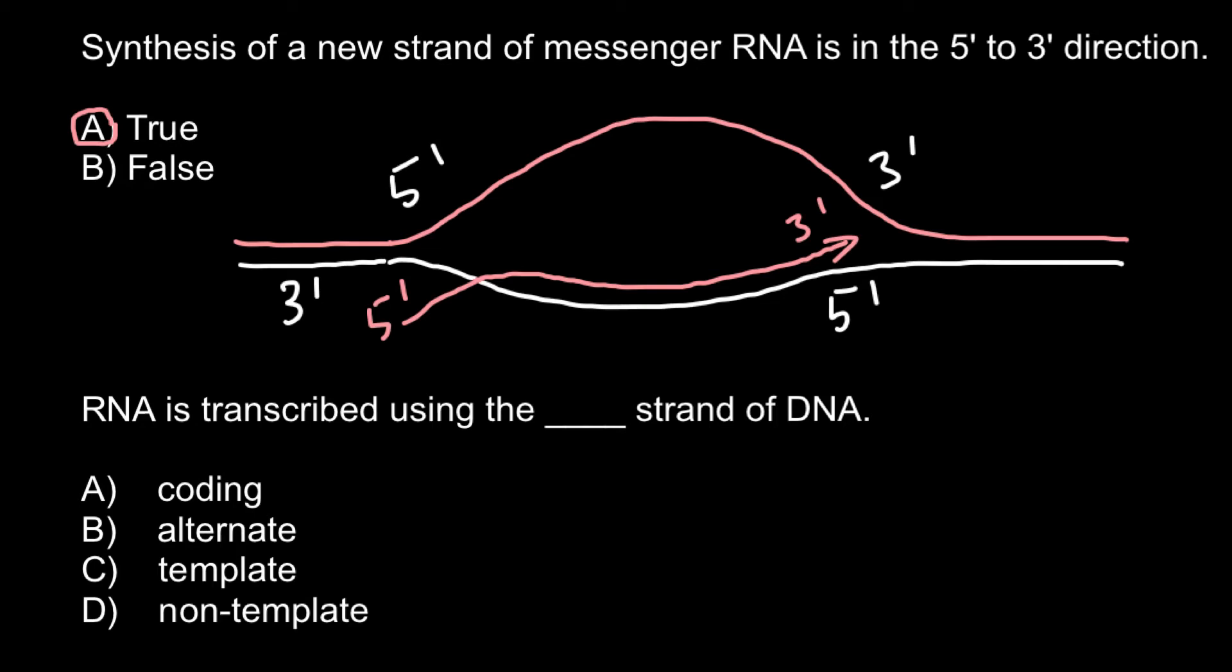For example, if we would have AUGCCA here on this strand of the DNA, we would have also ATGCCA. You have to remember that in messenger RNA, thymine is substituted with uracil.